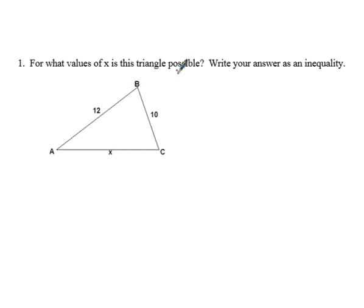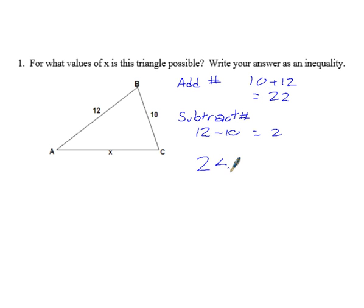It says for what values of X is the triangle possible? So this is kind of saying given two sides, what are my possibilities, what range of values is sort of my possibility for the third side? And we want to write our answer as an inequality. So when you get to a problem like this where they're asking you for the third side, it's a very simple process where you just add the numbers and then subtract the numbers. And all that's going to do is give you your range of values. So 10 plus 12 gives me 22. And when I subtract them, 12 minus 10, it gives me 2. So that means that my values have to be between 2 and 22.